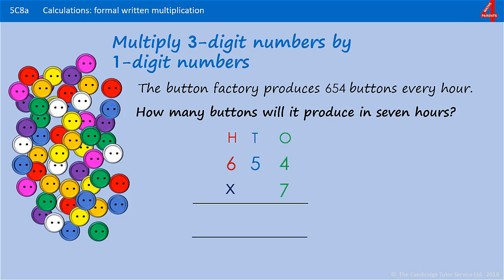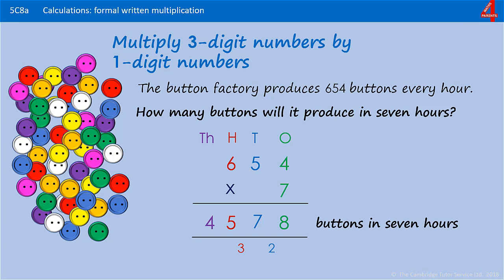Now we do the calculation. 4 times 7 is 28 — we put the 8 in and carry the 2. 7 times 5 is 35, add that 2, that's 37 — so we put the 7 in and carry the 3. 6 times 7 is 42, add the 3 that we've carried over, that's 45. We can put the whole of that 45 in. We now have 4,578 buttons made in 7 hours.